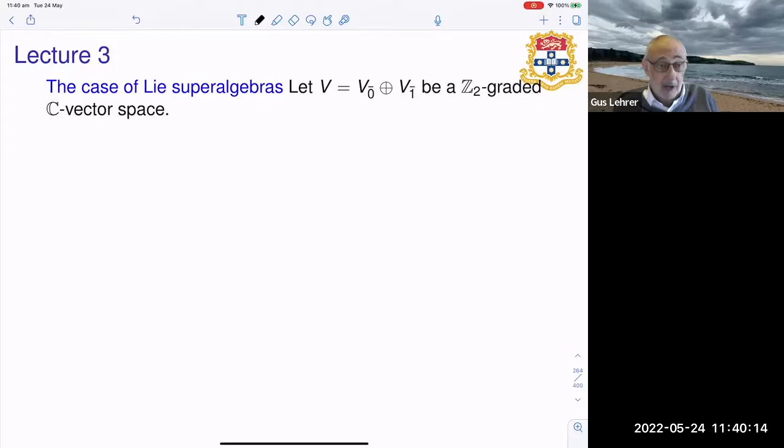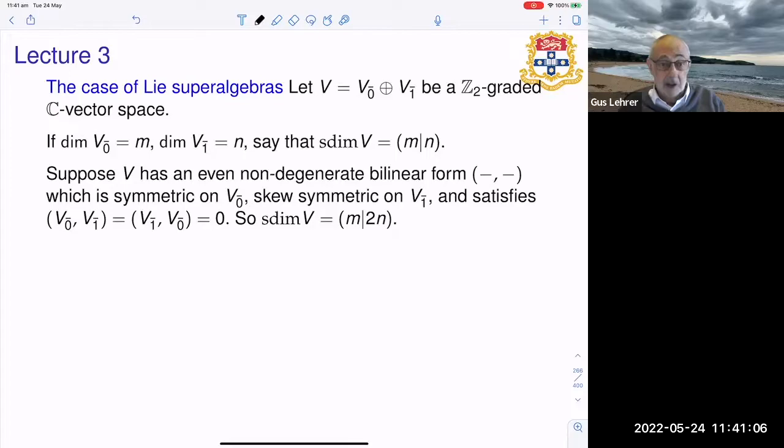I want to now introduce Lie super algebras. Super just means Z_2 graded, means there are two graded components, a zero component and a one component. There is some complication with signs. We take v to be a Z_2 graded C vector space and its super dimension is just the pair (m,n). And we suppose that it has an even non-degenerate bilinear form which is symmetric on the even part, skew symmetric on the odd part, and in which the odd and even parts are orthogonal to each other.